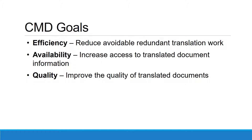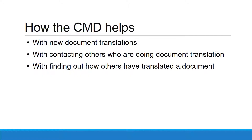The Clearinghouse for Multilingual Documents has three goals: efficiency, availability, and quality. The CMD aims to be efficient by reducing avoidable redundant translation work, to be available to more people by increasing access to translated document information, and to improve the quality of translated documents. The CMD helps LEAs by providing information about new document translations, supporting contact with others who are doing document translations, and by allowing users to learn how others have had documents translated. Reviewing a document that has already been translated is much easier than translating one from scratch. Enabling staff at schools and districts to communicate with others who are doing document translation work helps create a statewide document translation support group, making the CMD a hub of collaboration.